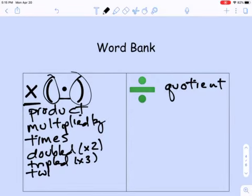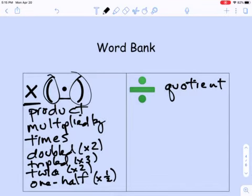You might see the word twice, which is also multiplied by two. And you also might see them say one half of something. When you see one half of something, that means you're multiplying it by one half. If they say one third of something, that would be multiplying it by one third.